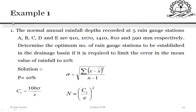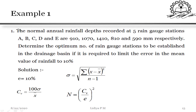First question: the normal annual rainfall depth recorded at 5 rain gauge stations A, B, C, D, E are 910, 1070, 1040, 810, and 590 mm respectively. Determine the optimum number of rain gauge stations to be established in the drainage basin if it is required to limit the error in the mean value of rainfall to 10 percent.